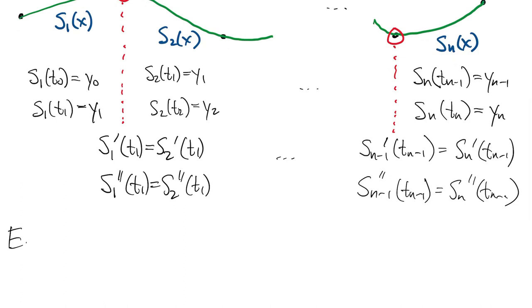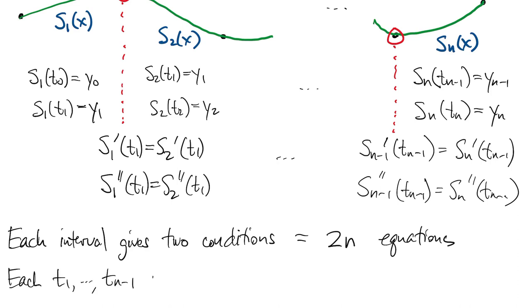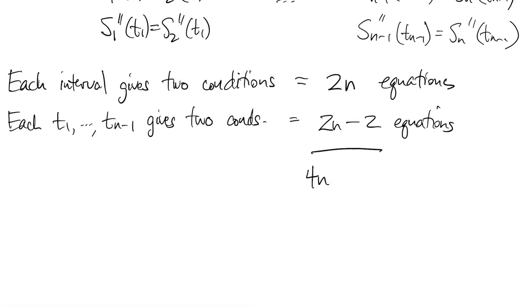Thus, each sub-interval gives us two conditions, which all together become 2n equations. Each knot gives us two more conditions for 2n minus 2 more equations. The grand total is 4n minus 2 equations on the unknown coefficients of the cubics.